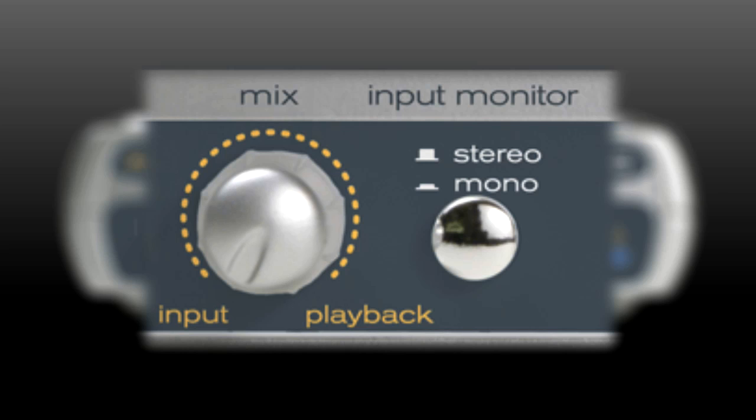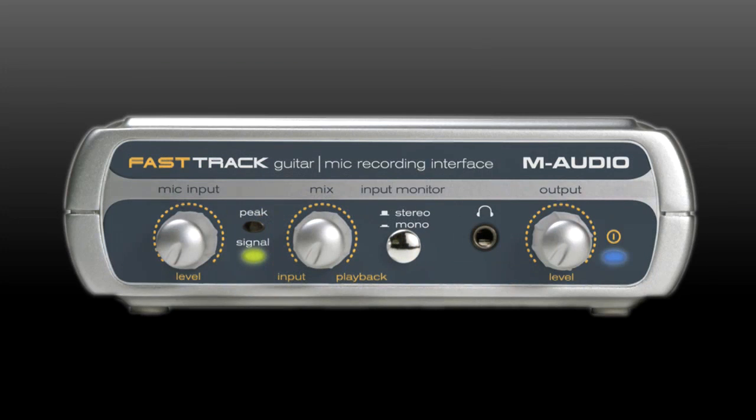The mix knob in the middle controls what you hear through the headphones and speakers. When turned all the way to the left, you will only hear your direct input signal. As you turn to the right, playback from the computer is blended in, and when turned all the way to the right, you will only hear playback from the computer.